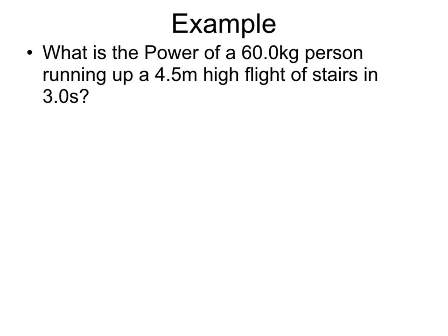So even though our formula is power is work over time, in this case we don't actually have our amount of work. So we'll write out what we do have. Like I mentioned, we're missing our work. We're solving for power. We're given a mass. We know our change in height is 4.5 meters, and our time is 3 seconds.